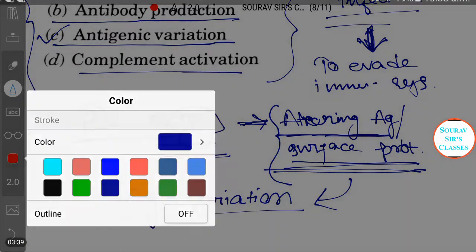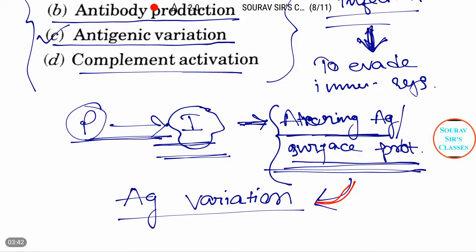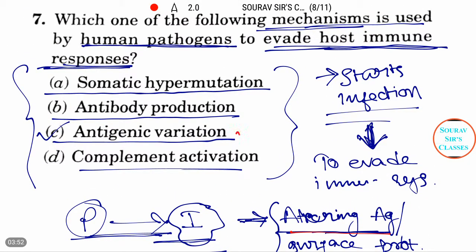Let me change the color for you. That is called this. So this is the thing and the answer will be antigenic variation.